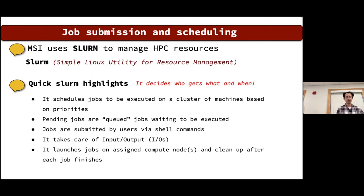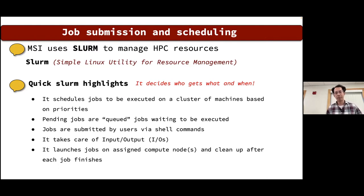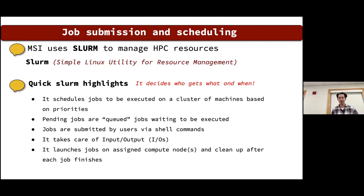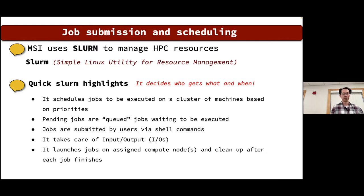MSI uses SLURM — Simple Linux Utility for Resource Management. It essentially decides who gets what and when. It schedules jobs based on priority values, holds pending jobs in a queue, accepts jobs submitted via shell commands, handles input and output for the job, launches jobs on compute nodes, and cleans up after your job finishes.